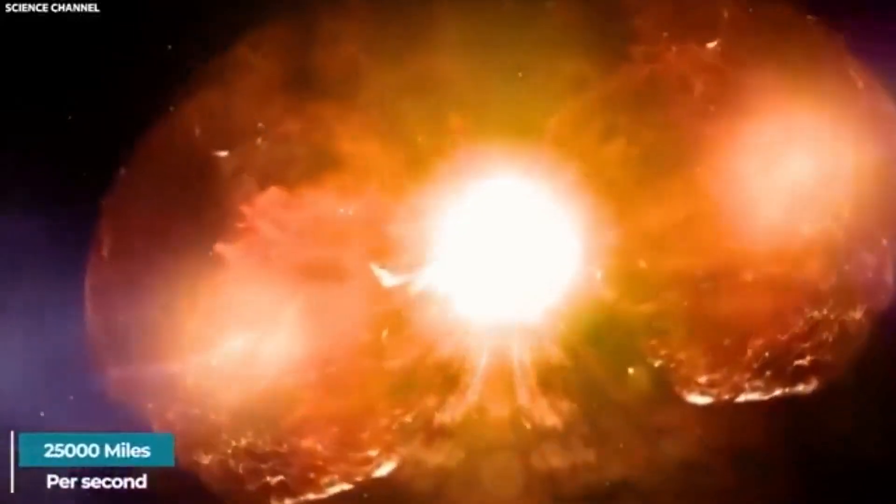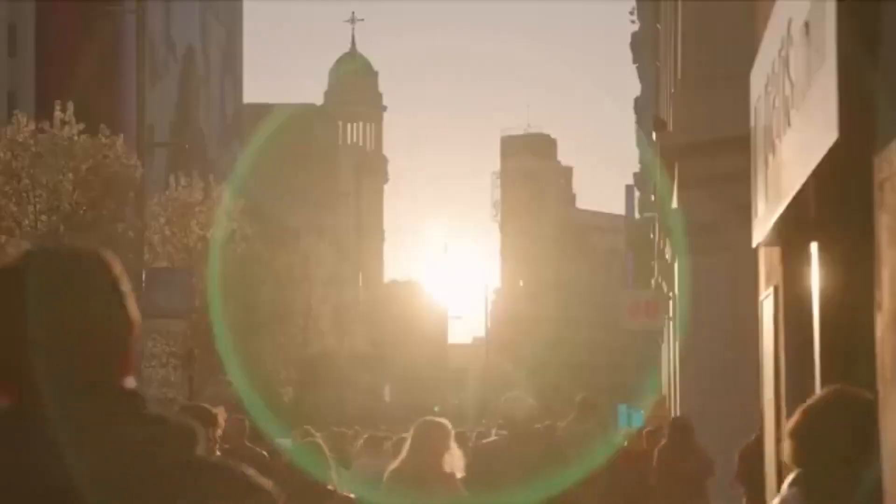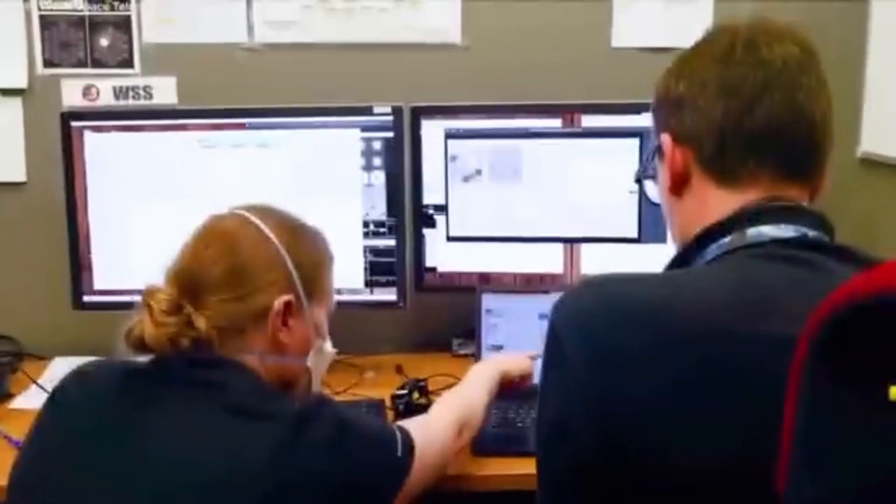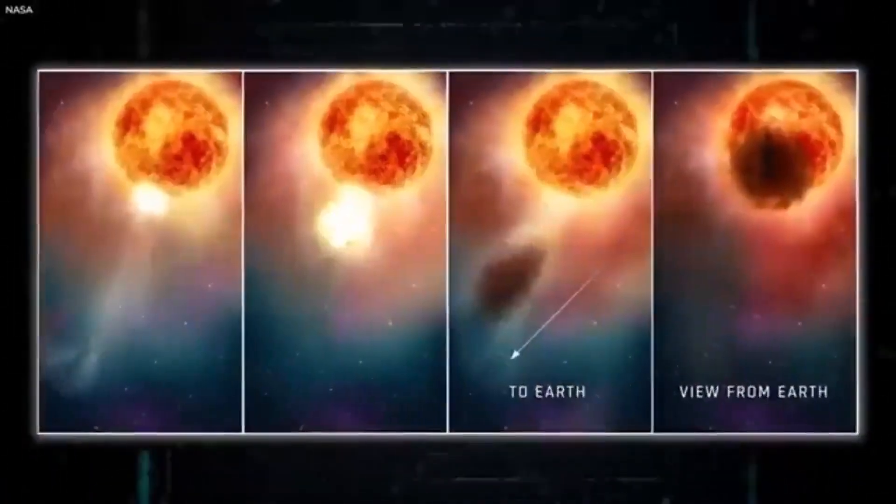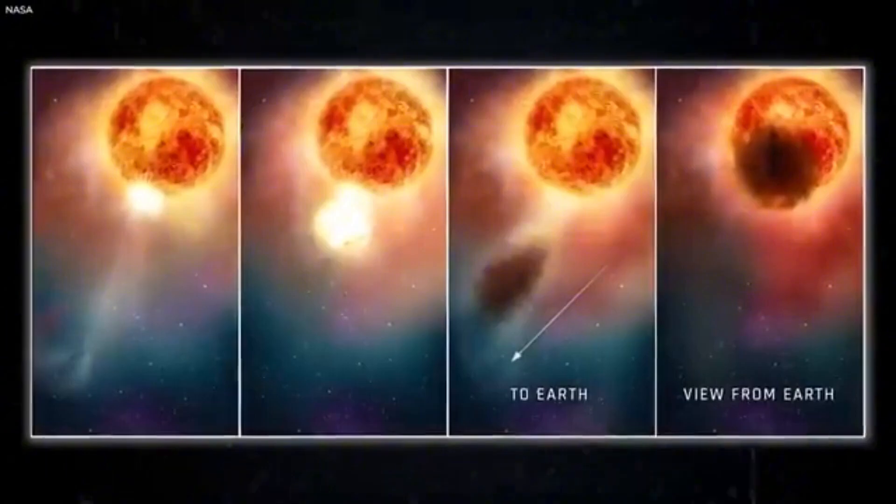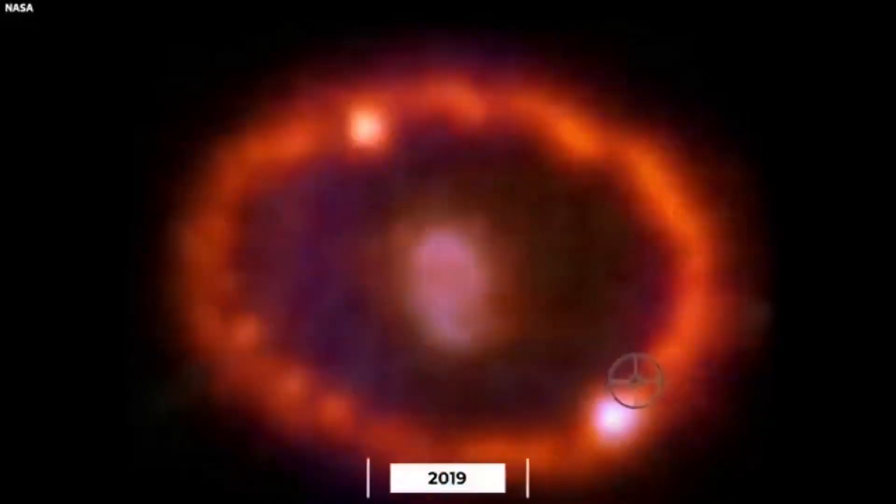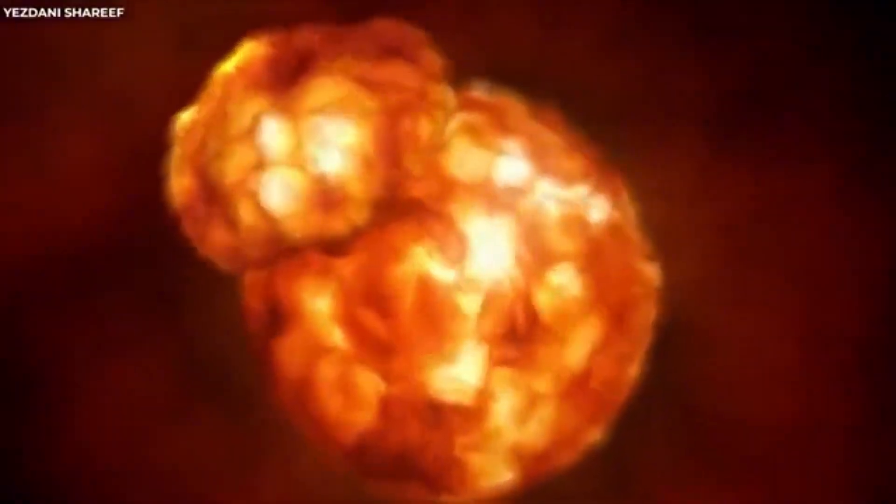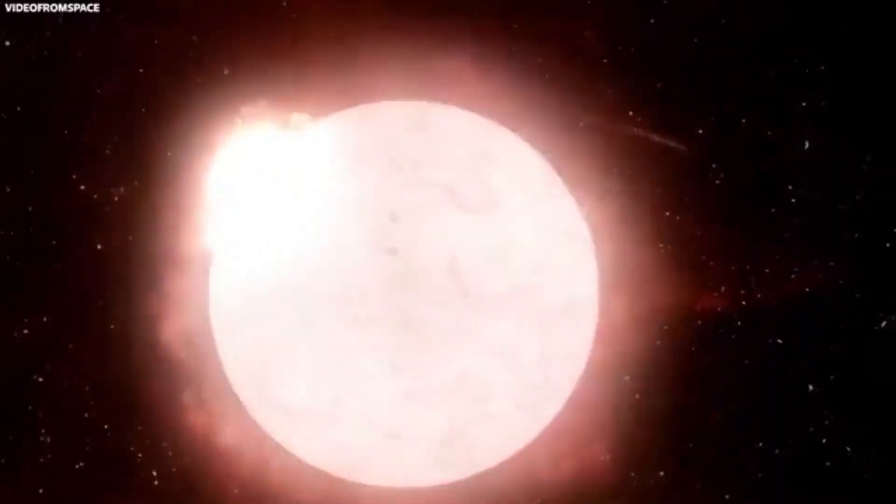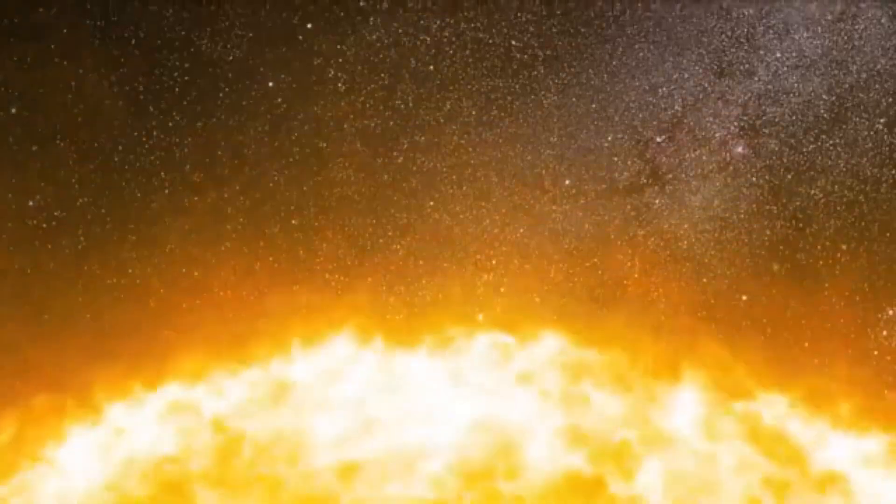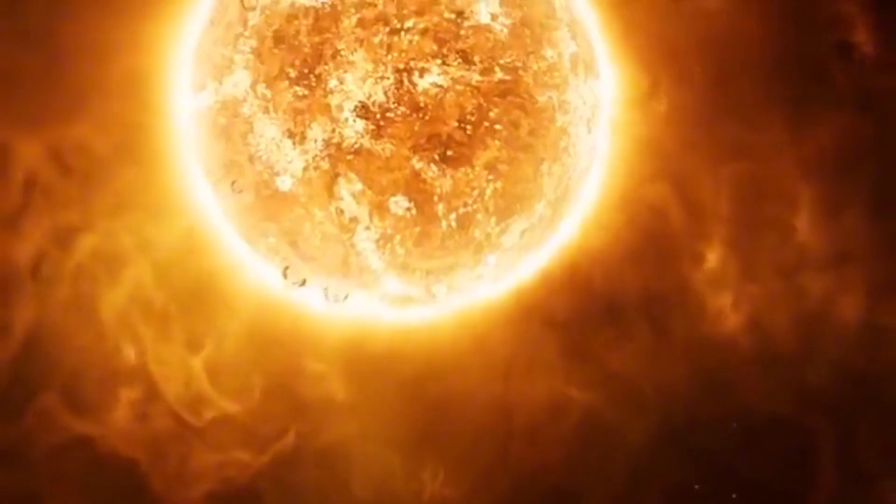Let's talk about that supernova, because it's the main event. When Betelgeuse goes, it'll be unlike anything humanity has witnessed. For weeks, maybe months, it'll dominate the sky, a beacon brighter than the full moon. Its energy will be staggering, more than our sun will emit in its entire lifetime, released in a matter of seconds. The blast will send shockwaves through space, compressing nearby gas clouds and sparking new star formation. The remnants of Betelgeuse might collapse into a neutron star or even a black hole, a final gift to the cosmos. For those of us on Earth, it'll be a front-row seat to the universe's raw power, a reminder of how fleeting and fragile our existence is.